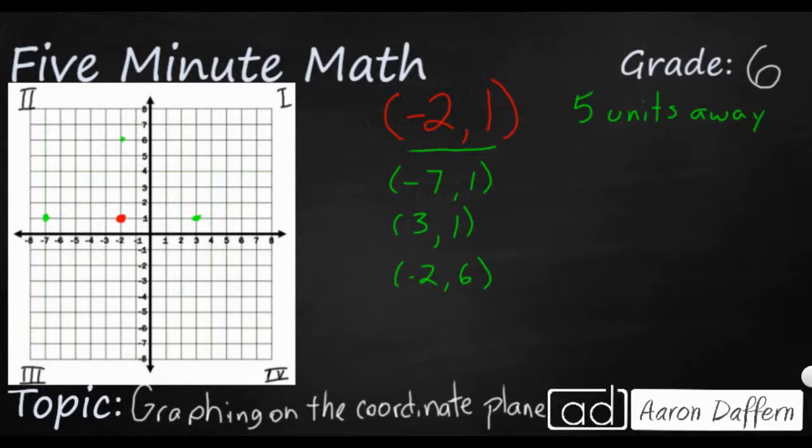And the final one is going to stay with my -2 x-coordinate, but we're going to move down 1, 2, 3, 4, 5. So that's going to be -4. Those are your four options that are five units away.